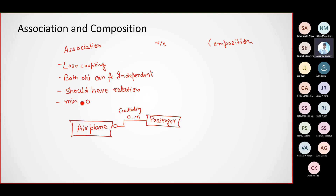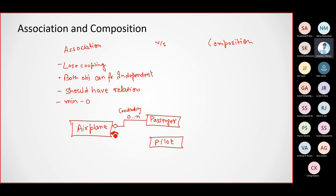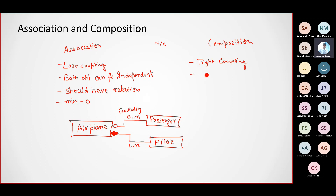Whatever association we did in CDS is a loose coupling. On the other side, we have the pilot. Can a plane fly without a pilot? No. It's represented using a filled rhombus, and the minimum cardinality is one. This is a tight coupling between two objects — both cannot function independently.